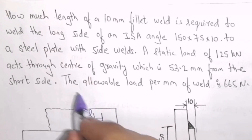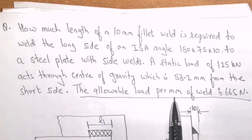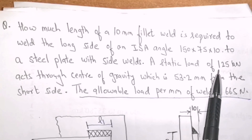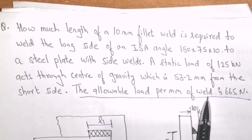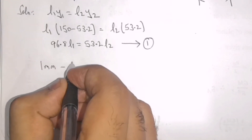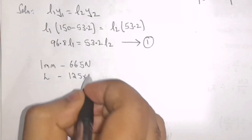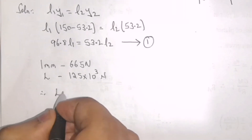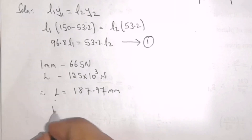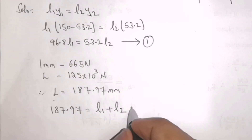In the question, the allowable load per mm of weld is 665 N, meaning 1 mm of weld can sustain a load of 665 N. The total load is 125 kN. We find how much total weld length is required to sustain 125 kN. For 1 mm of weld the load is 665 N, so solving for the required length gives a total weld length of 187.97 mm. Therefore, L1 plus L2 equals 187.97 mm. Let this be equation number 2.